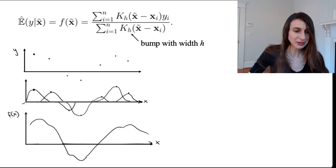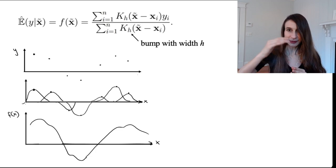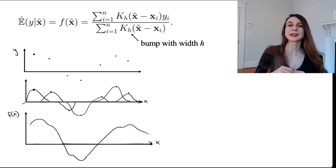So with kernel regression, all you do is take a bump and place it on each data point, and the height of the bump is exactly y for xi.